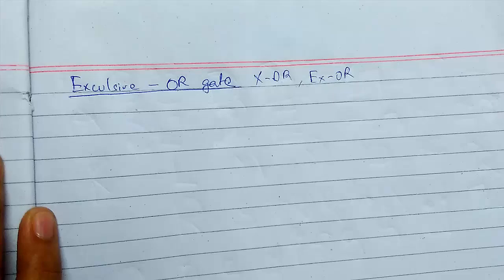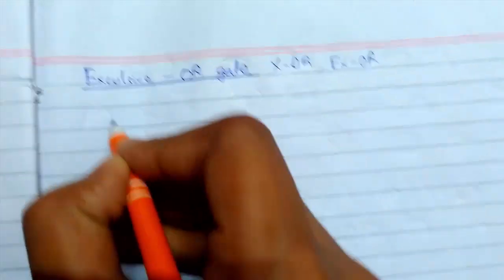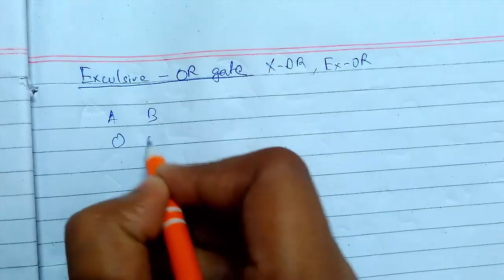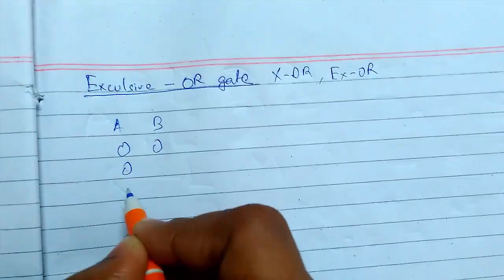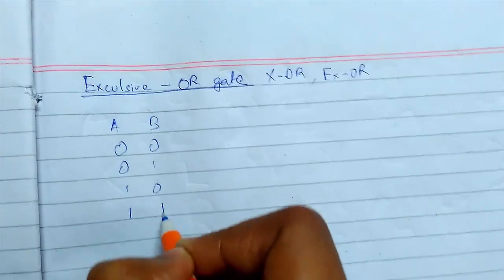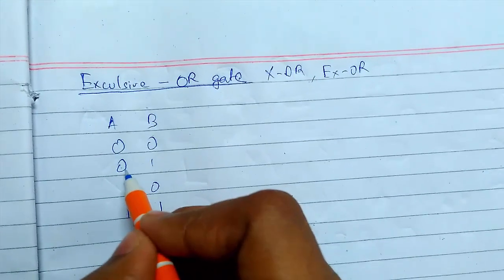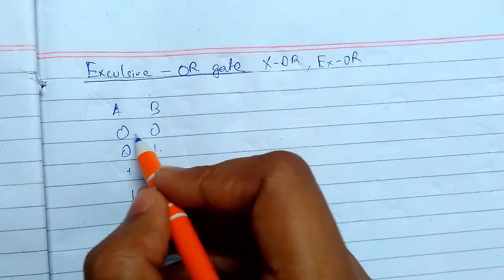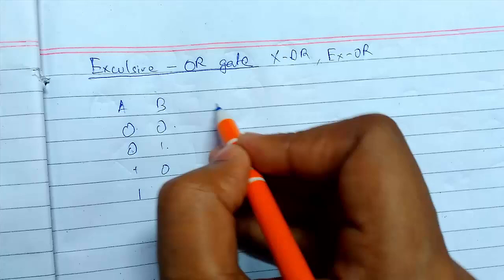When the inputs of XOR gates are at different logic levels, suppose A and B, I will write the truth table for it. When the inputs are different, like 0 and 1, or 1 and 0, then the output will be high. On the other hand, for the other cases the output will be low.